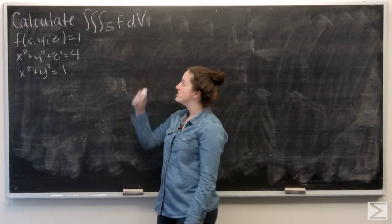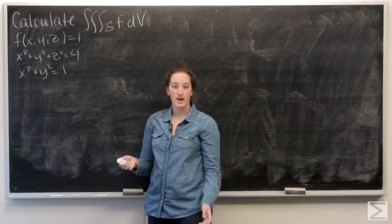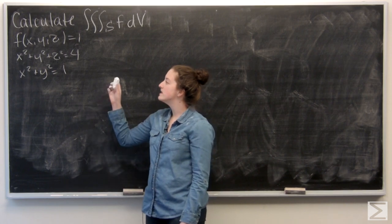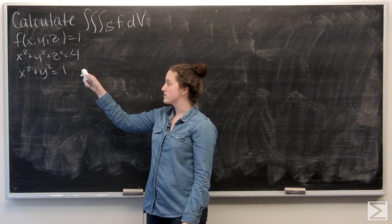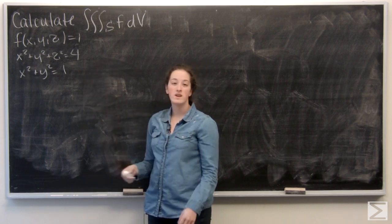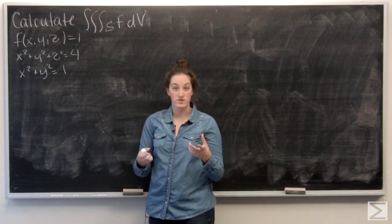So in this problem, we're given a region S. It is the area bound between a sphere, x squared plus y squared plus z squared equals 4, and the right cylinder, x squared plus y squared equals 1.